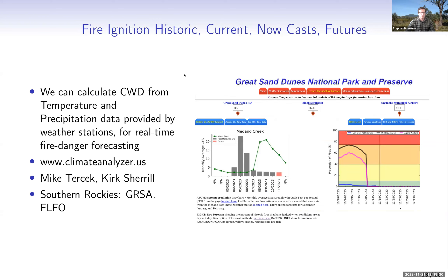Because we can calculate CWD from temperature and precipitation data collected by weather stations in near real time, we can use this model as a real-time fire ignition danger forecasting system. My collaborators Mike Tercik and Kirk Sherrill from the National Park Service have created dashboards for Great Sand Dunes and Florissant Fossil Beds in the Southern Rockies using real-time weather station data to develop real-time projections of fire ignition danger, along with short-term and long-term forecasts available on their website.